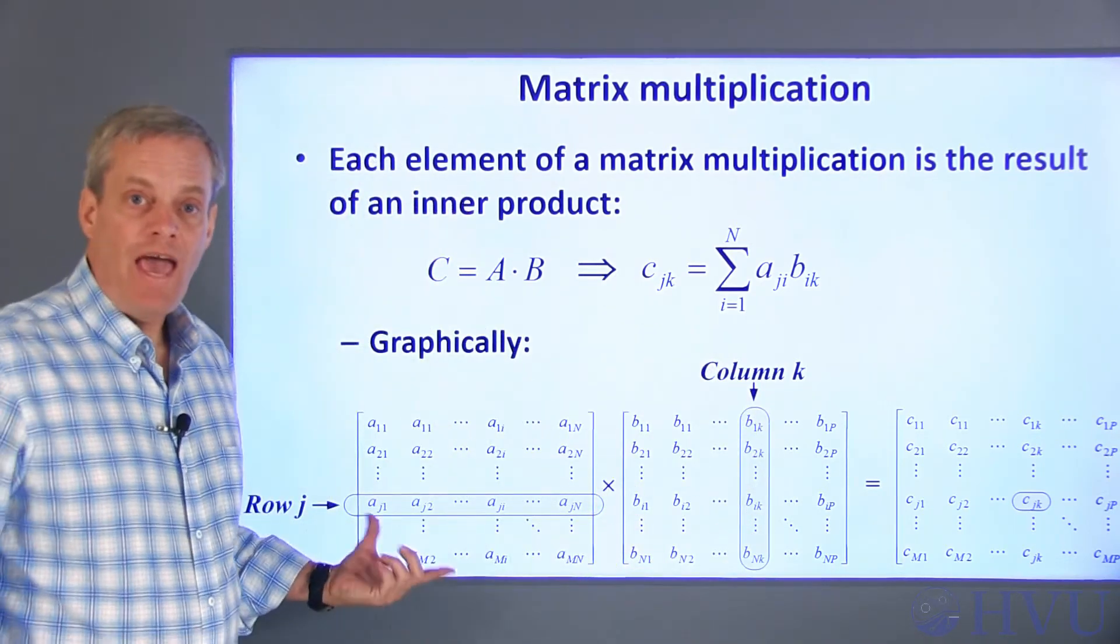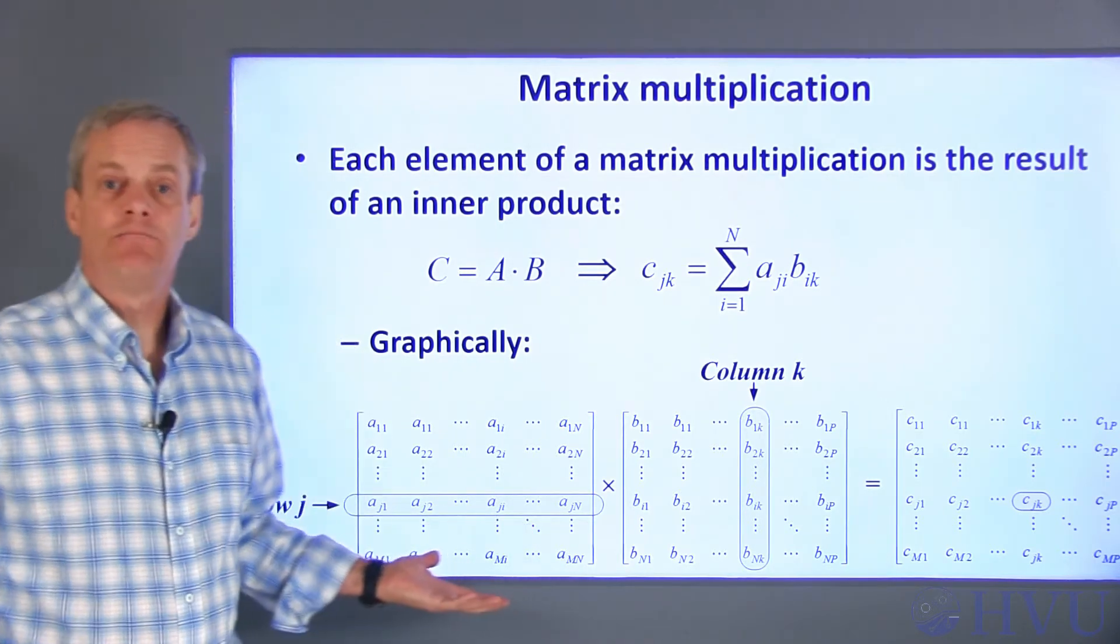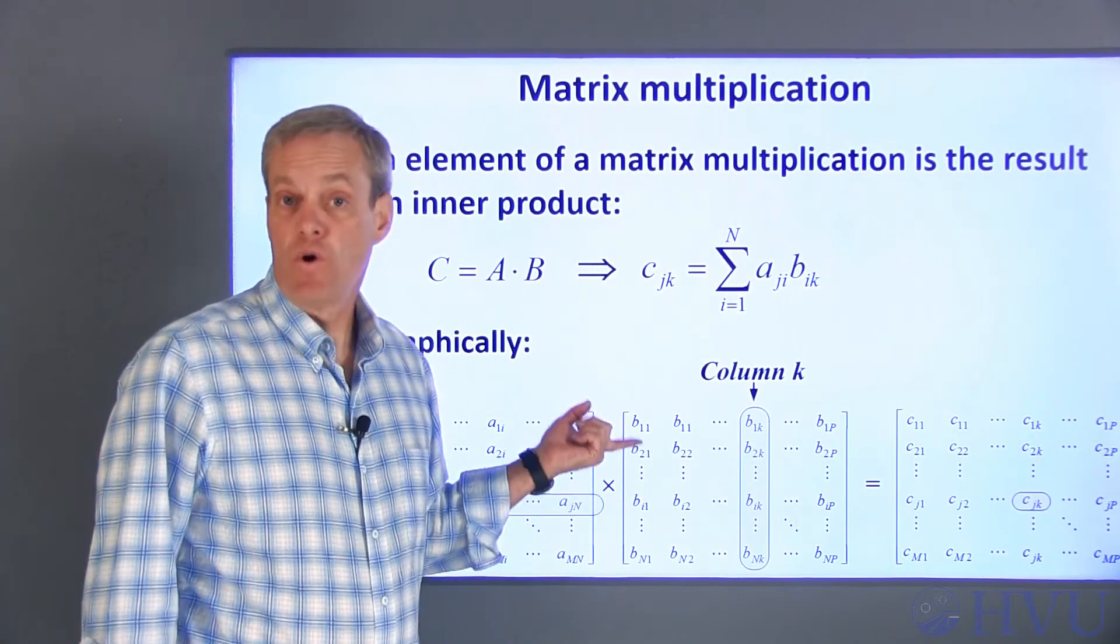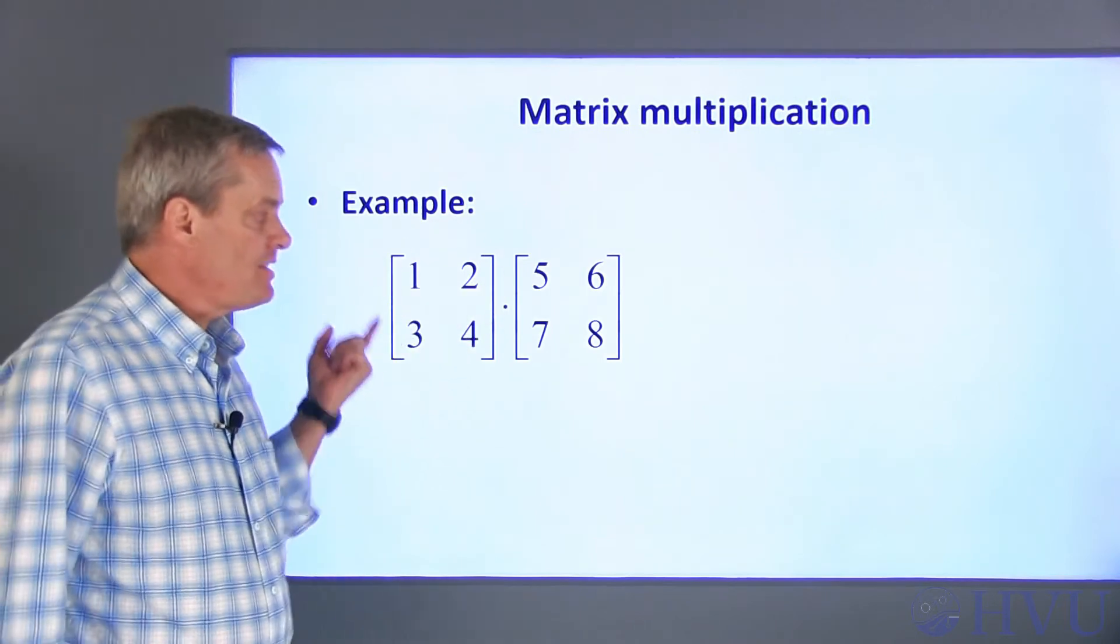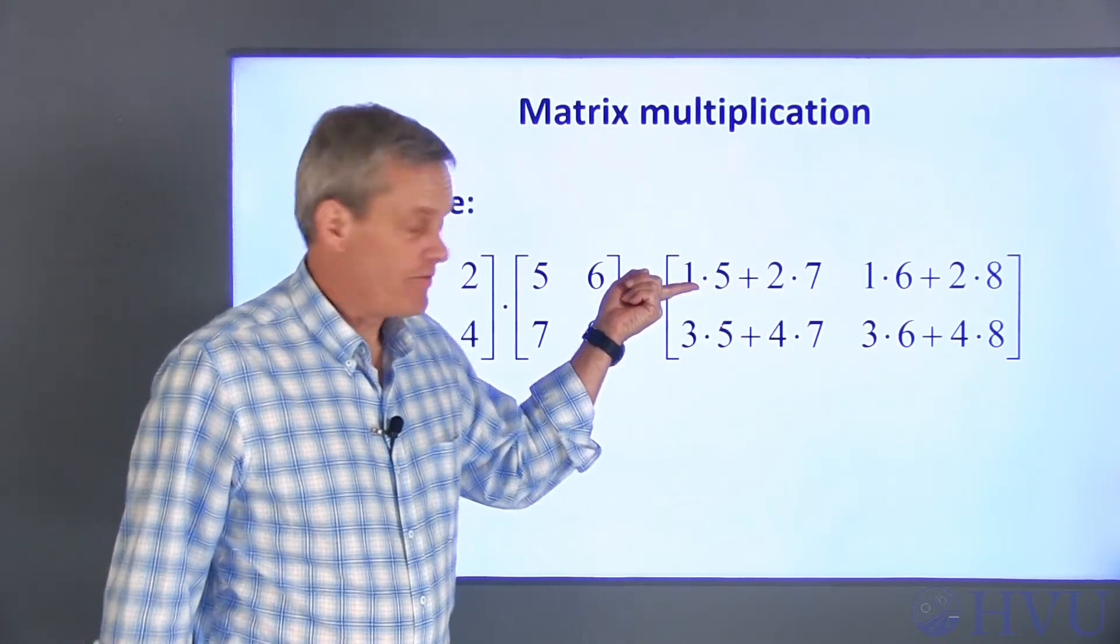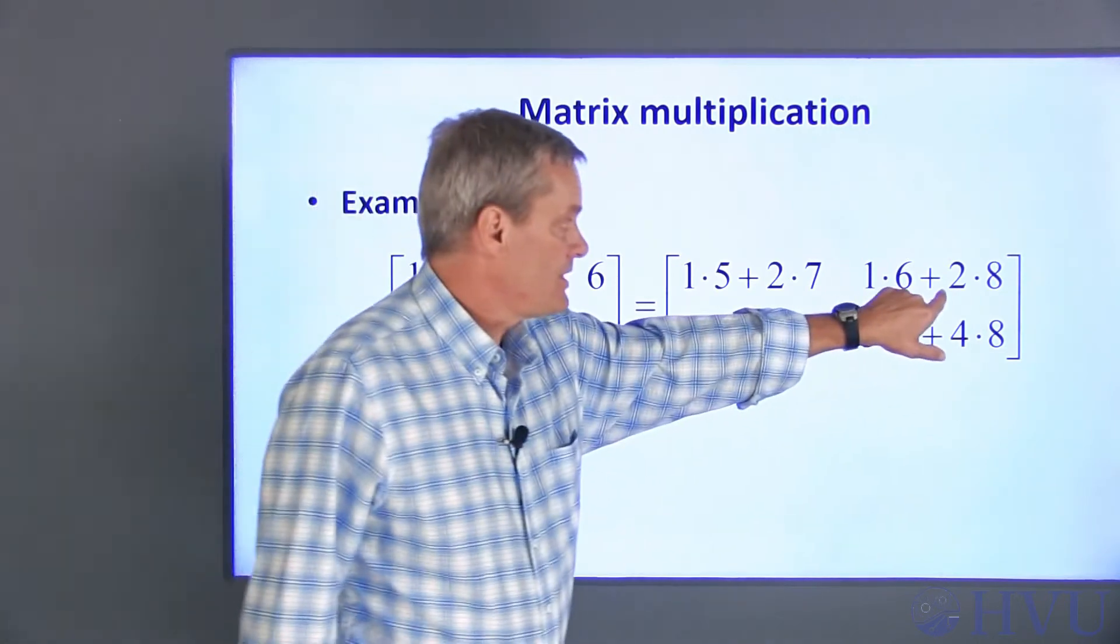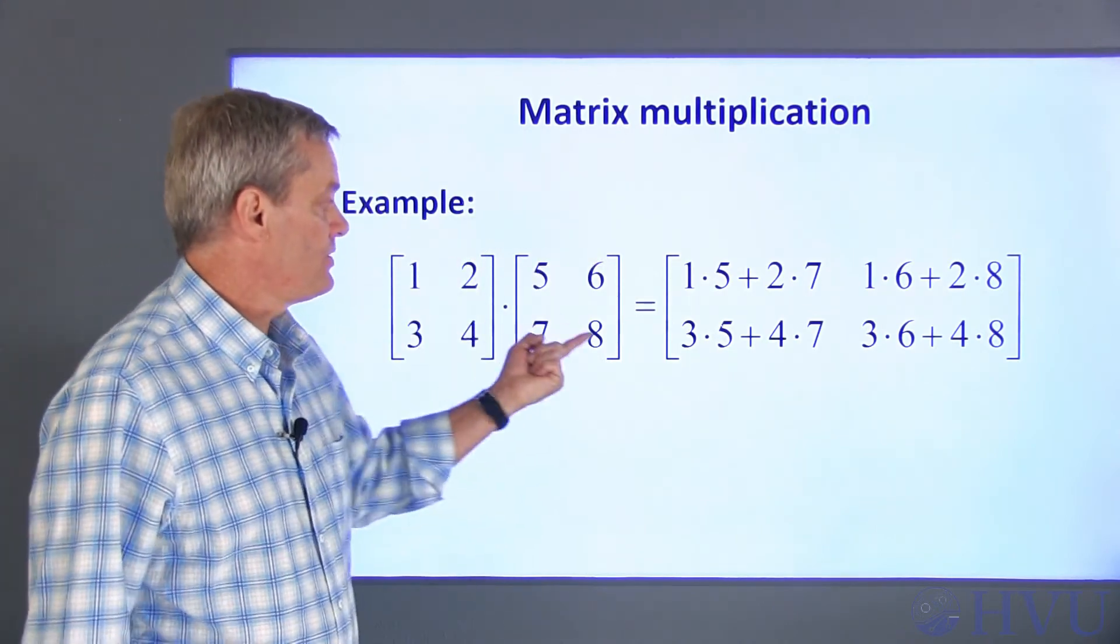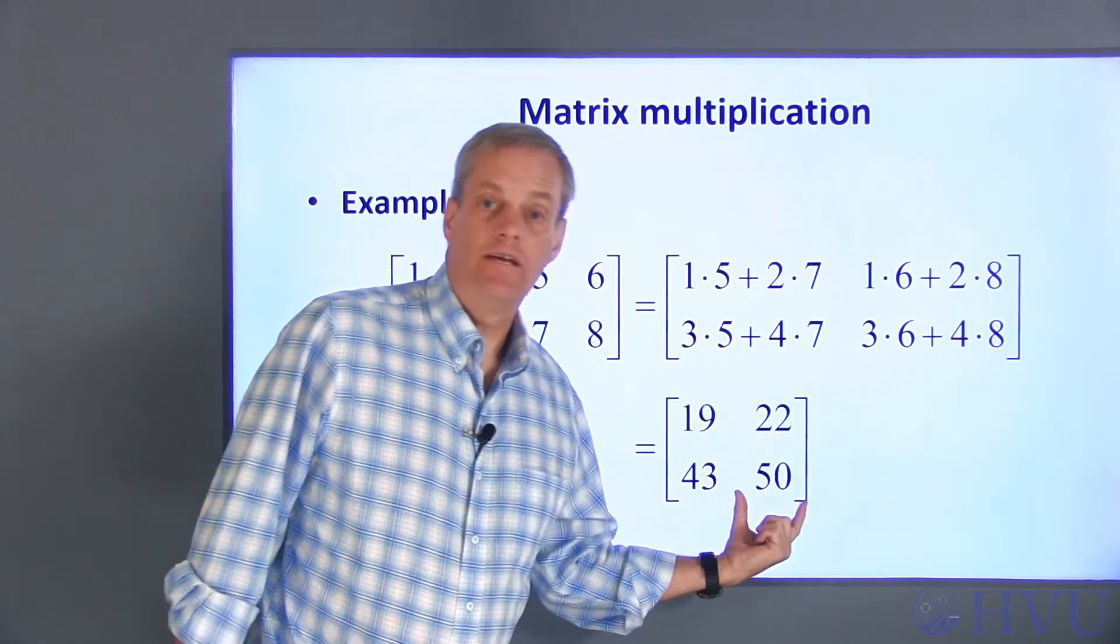Notice that the row vector of A and the column vector of B have to have the same number of elements to perform the inner product. This implies that the number of columns of the first operand matrix has to be the same as the number of rows of the second operand matrix. Let's try a simple example. I want to multiply this matrix times this one. The element in the first row and the first column of the result is going to be 1 times 5 plus 2 times 7. The element in the second column first row is going to be the first row times the second column, which is 1 times 6 plus 2 times 8. So after I add these all up, I get 19, 22, 43, and 50.